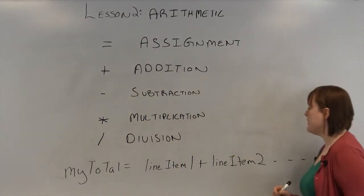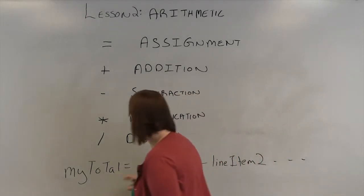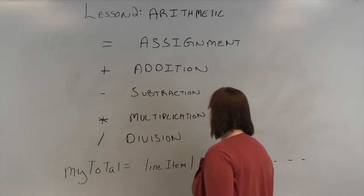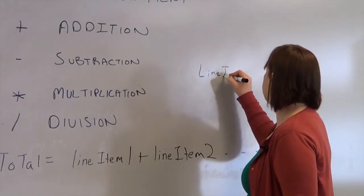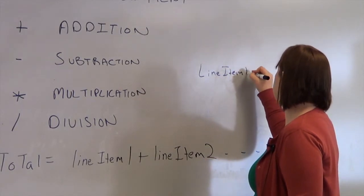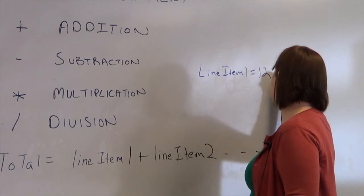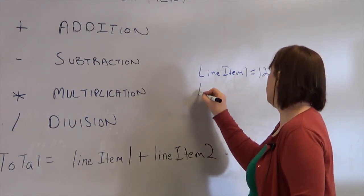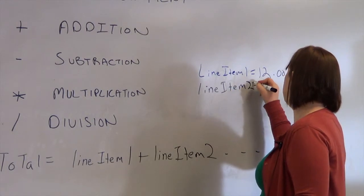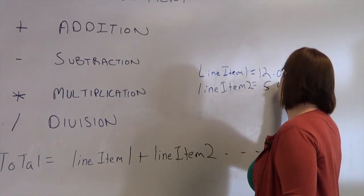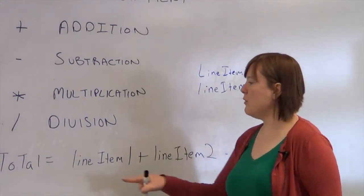There's actually an easier way to do this if you're going to have a bunch of them, but you can actually add things together and equals will store the answer here. So if line item 1 equals 12 and line item 2 equals 5, what will happen is you'll actually add these together and then the total